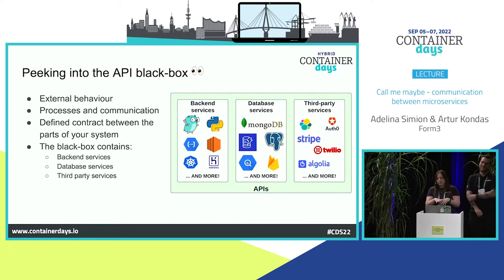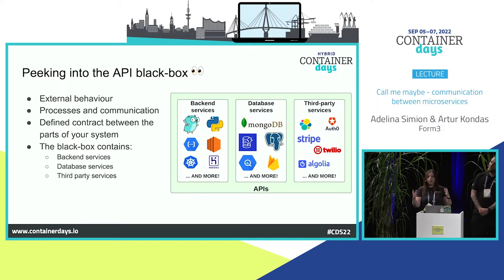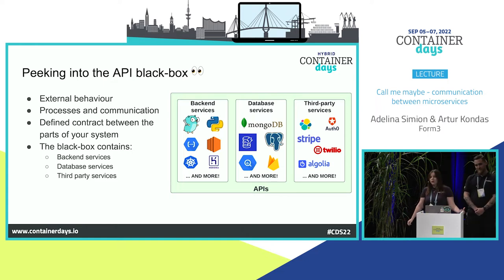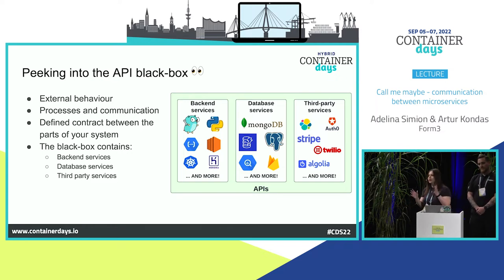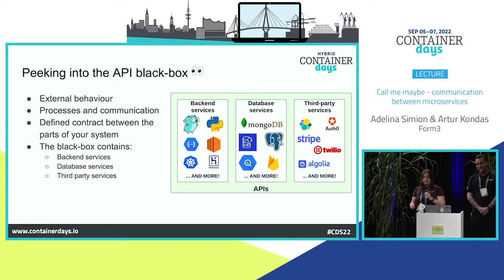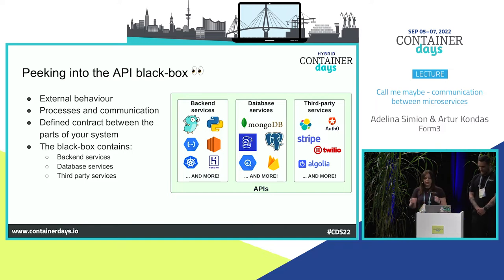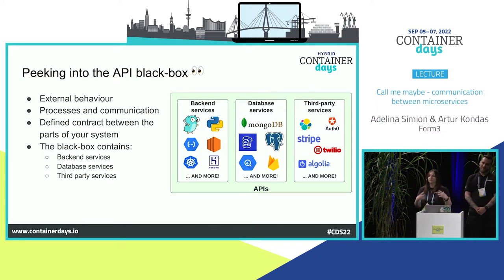If we peek into the API black box, we see a variety of services that can help you build complex behaviour in your system. We've got back-end services — serverless or deployed in whatever cloud you want — a variety of databases like Postgres, DynamoDB, Firebase, and third-party services for search, notifications, or authentication. The API black box is acknowledged in the JAMstack, but it's up to us how we want to communicate with it.